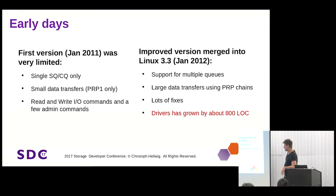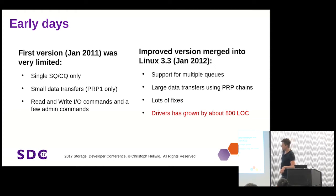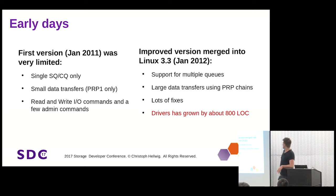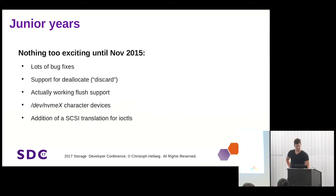January 2012, one year exactly — and at that point it started to resemble what we think of as NVMe. It got multiple queue support, basically one per CPU. It was pretty strict about that and didn't really work well if you had fewer queues than CPUs. It supported larger data transfers, lots of fixes, and had grown about 800 lines of code — quite a bit bigger than before.